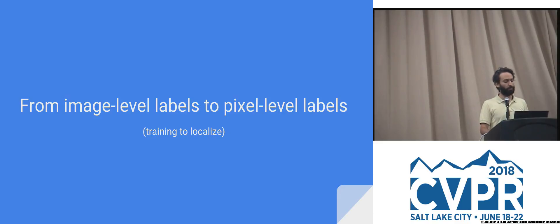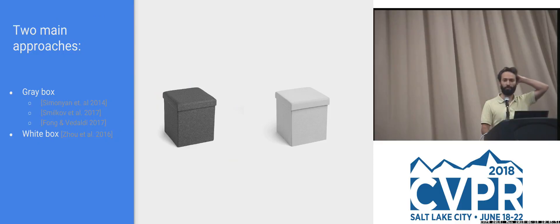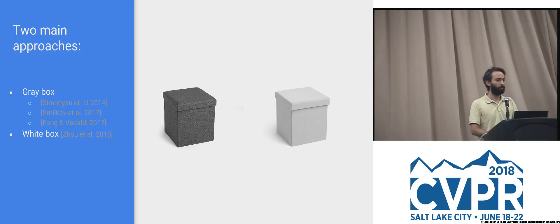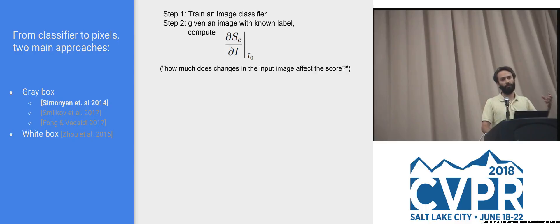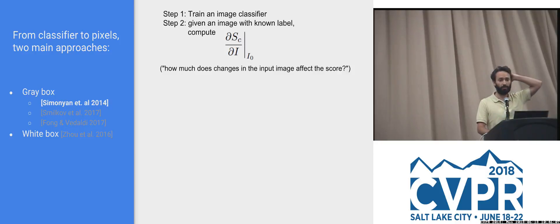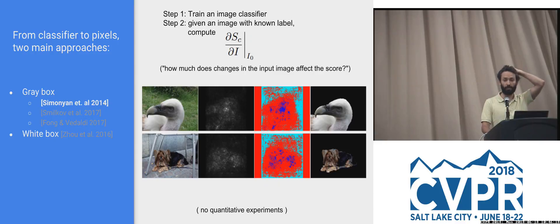Let's now dig into concrete examples. First: going from image-level labels to pixel-level labels. There are two philosophies: the gray-box approach and the white-box approach. The gray-box approach takes a trained classifier and does something on top of it to figure out the extent of the object. The most vanilla version is taking the gradient of the image with respect to the class scores — if I change this image a bit, how does it affect the score? This was quite a discovery in 2014 and gives surprisingly good results.